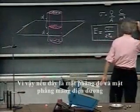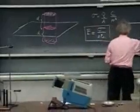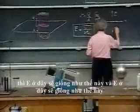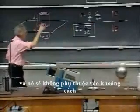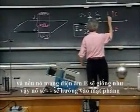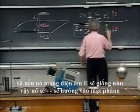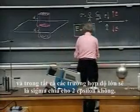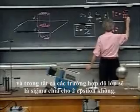So if this is that plane and the plane is positively charged, then E would point away like this on both sides, independent of distance. And if it is negatively charged, E would point towards the plane on both sides. In all cases, the magnitude would be sigma divided by two epsilon zero.